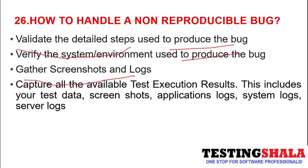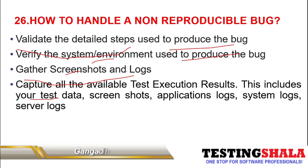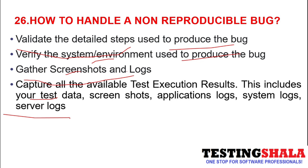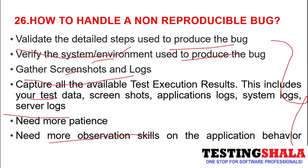By validating the detailed steps, the environment, and the screenshots and logs, we will try to execute the same steps in our environment and capture all the data — including test data, screenshots, application logs, system logs, and server logs — to understand why the issue is not reproducible. In the first instance we may not be able to reproduce it; that requires patience, and you will need more observation skills on the application behavior.